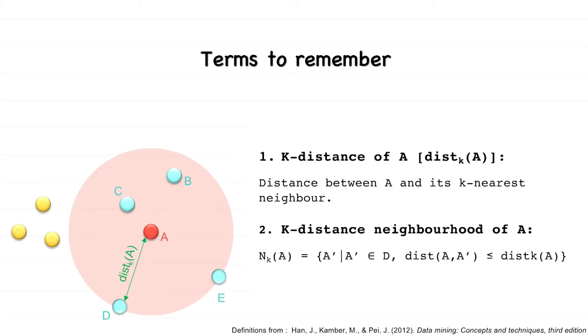K-distance neighborhood of A is the set of all objects which are at a distance less than the k-distance of A from point A. In case of this example where we've taken k equals 3, the k-distance neighborhood of A contains all the neighbors of A in or on the pink circle, that is points B, C, D, and E.